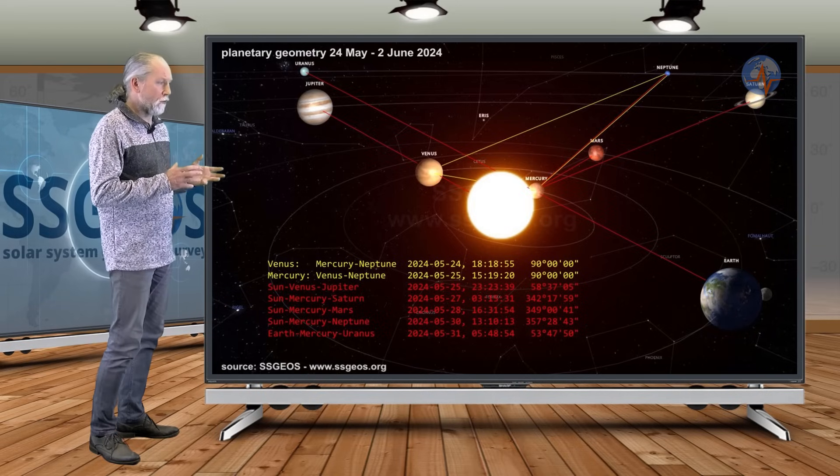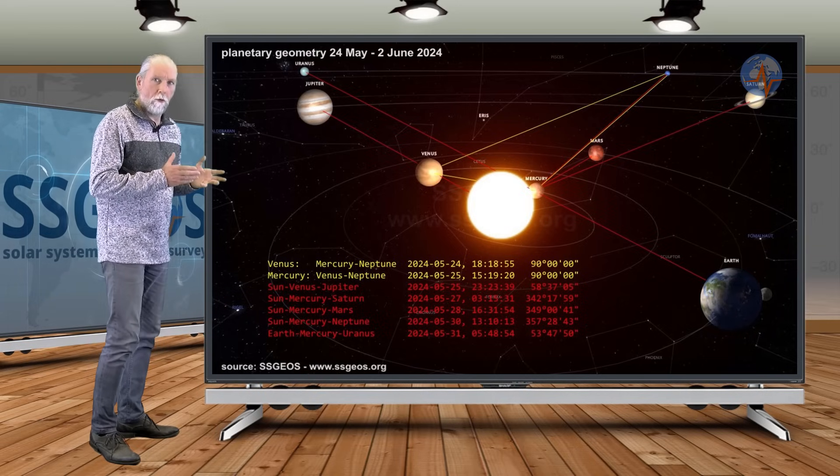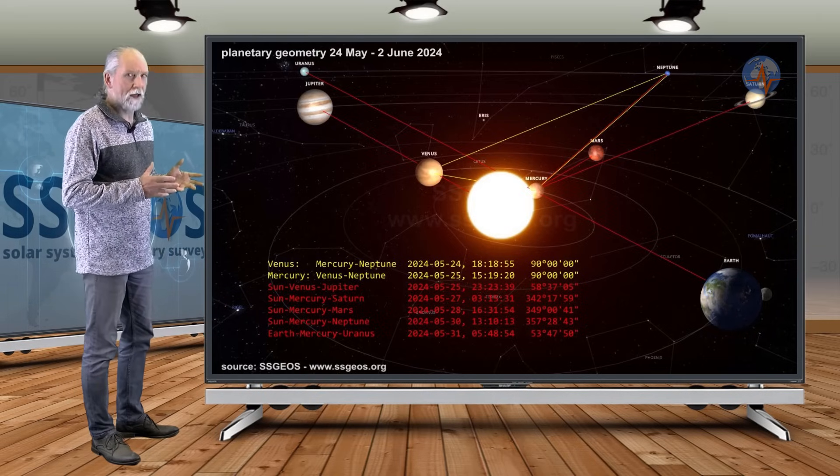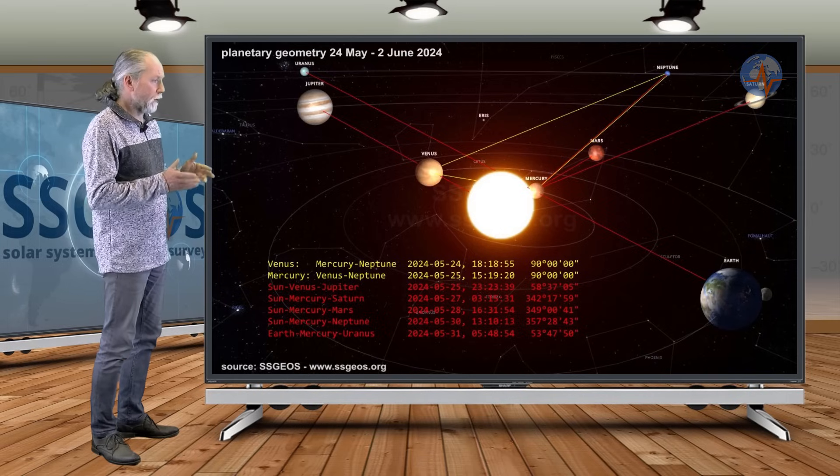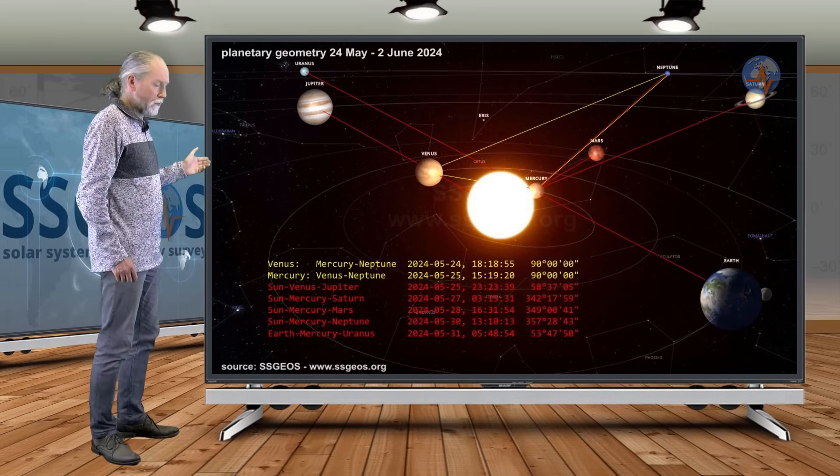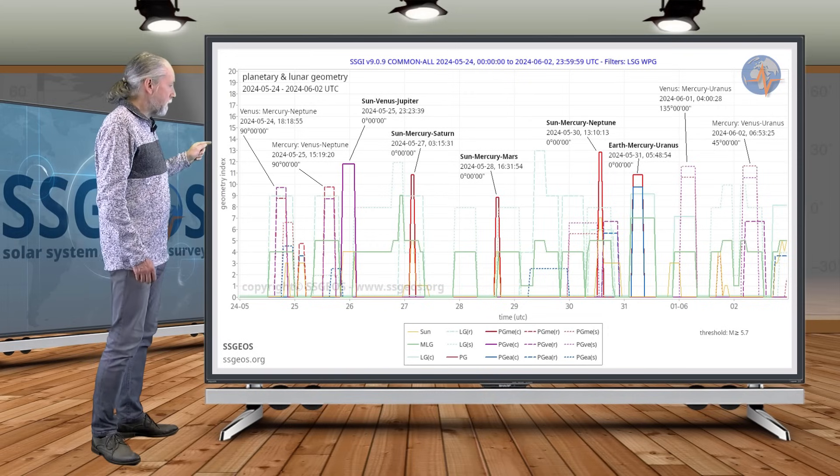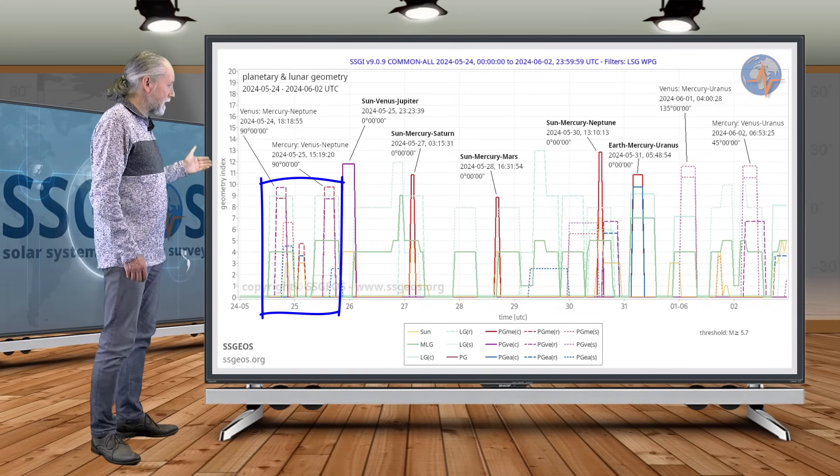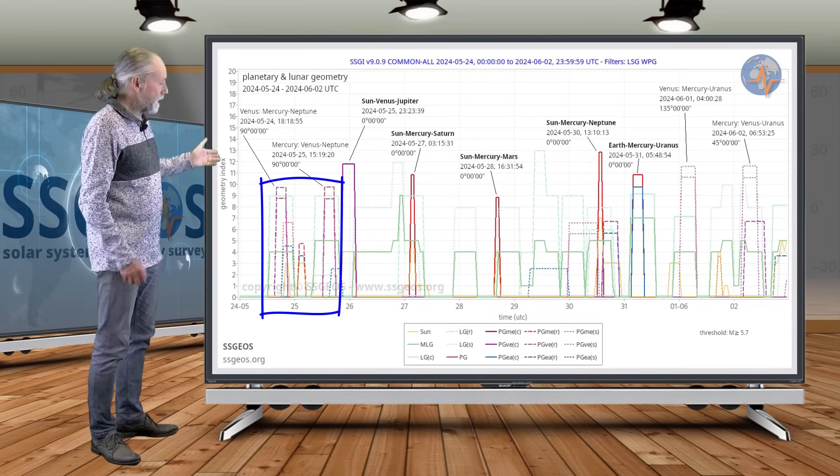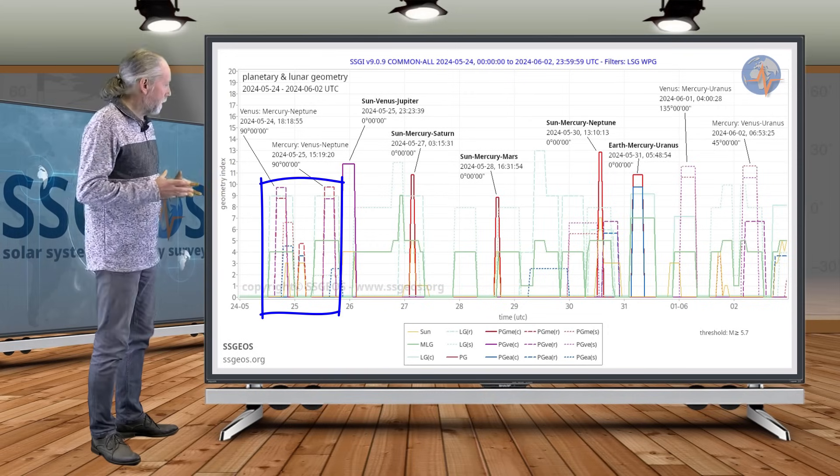We should also see the yellow markings. This is the right angle geometry, and that will be with Mercury, Venus, and Neptune. And looking back at the SGI graph, we see that geometry early on. Yesterday night and tonight, that is almost always in a pair, this geometry.